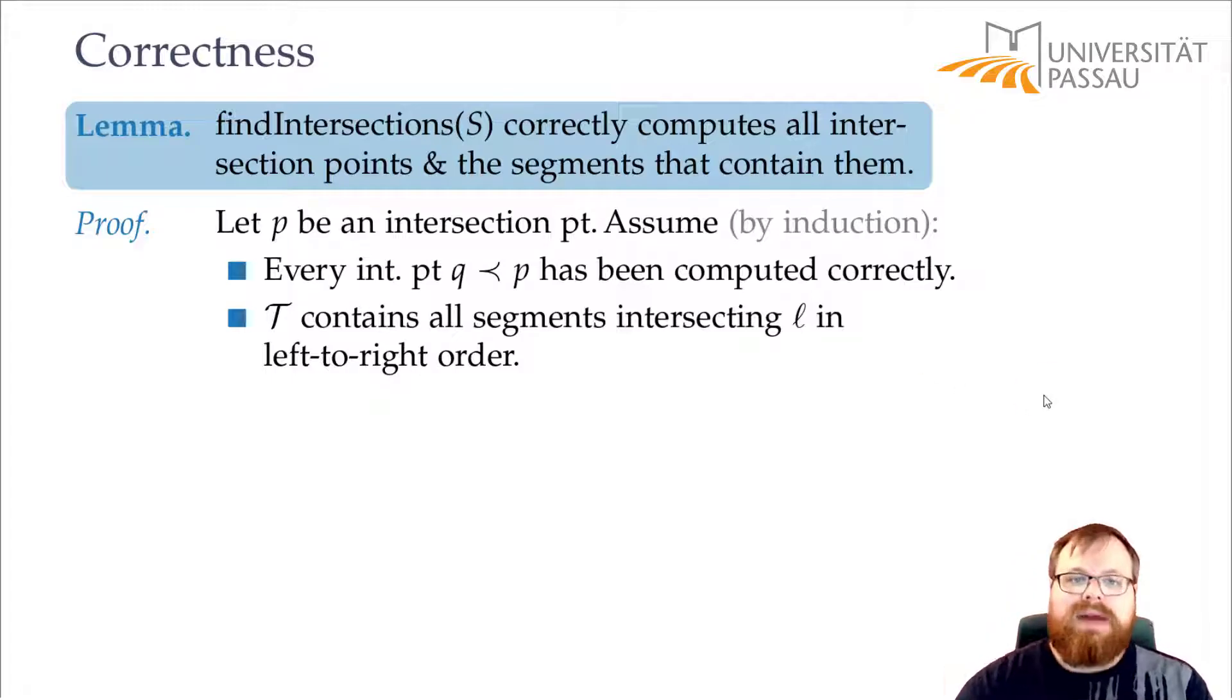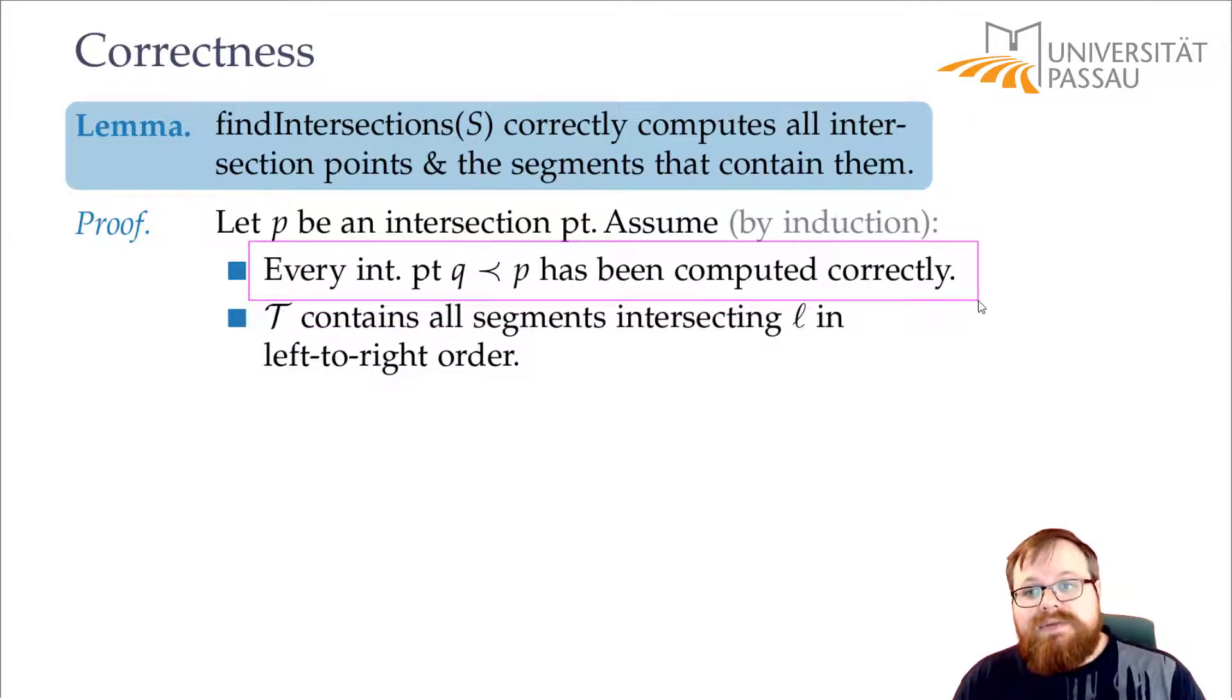What is at the very end? If we have found the very last intersection point, and this holds for every intersection point, then it immediately follows that all intersection points have been computed correctly.